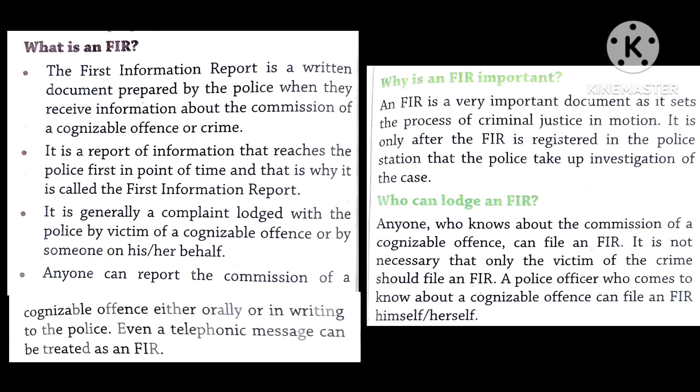The First Information Report is a written document prepared by the police when they receive information about the commission of a cognizable offense or crime. So, the First Information Report is a document that is made by the police.